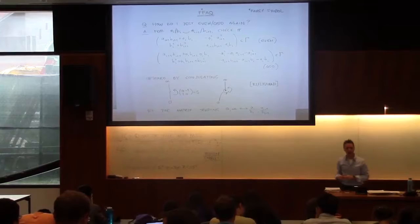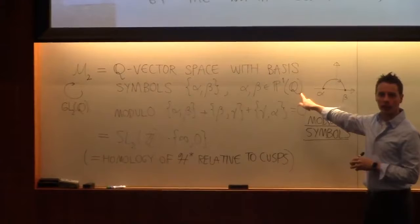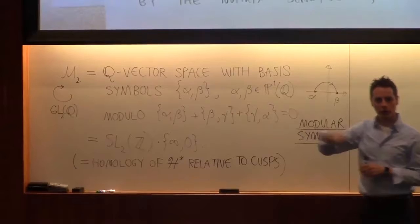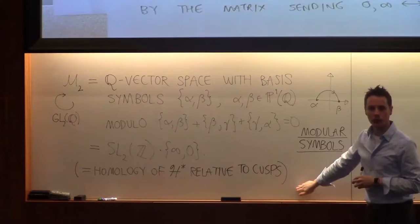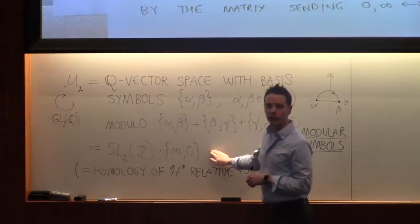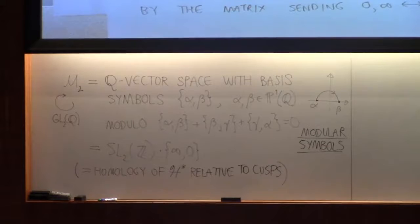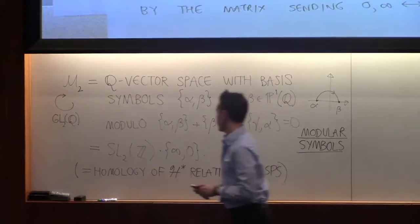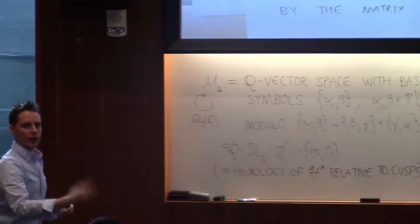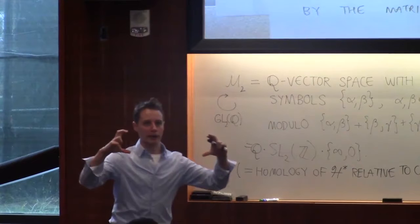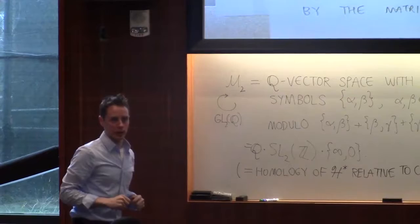I introduced them yesterday. It is a giant Q vector space of symbols. The basis is given by elements of P^1(Q), that's the rational numbers union infinity. Modulo this relation that says that if I do the path from alpha, beta, beta, gamma, and then gamma, alpha, I have created a trivial path. Can we just declare this to be true? If you are a topologist, you would say that this is the homology of the upper half plane relative to the cusps. We proved using the Euclidean algorithm in the guise of continued fractions that this Q vector space is spanned by the single symbol infinity zero. So if I hit it with SL_2(Z) and then I take all the Q linear combinations, you might think about this as a Q[SL_2(Z)] module, and then it is generated by a single element.